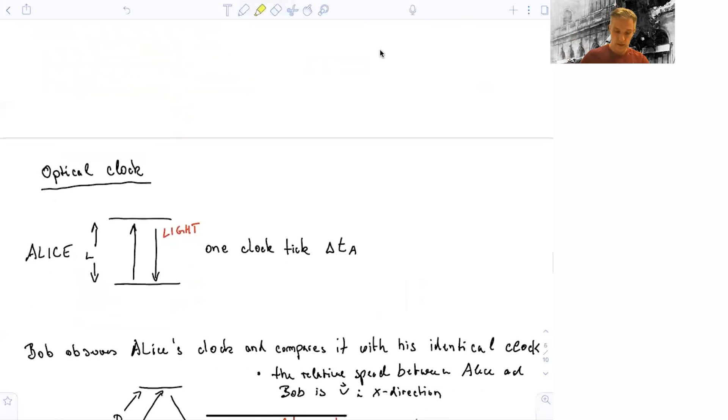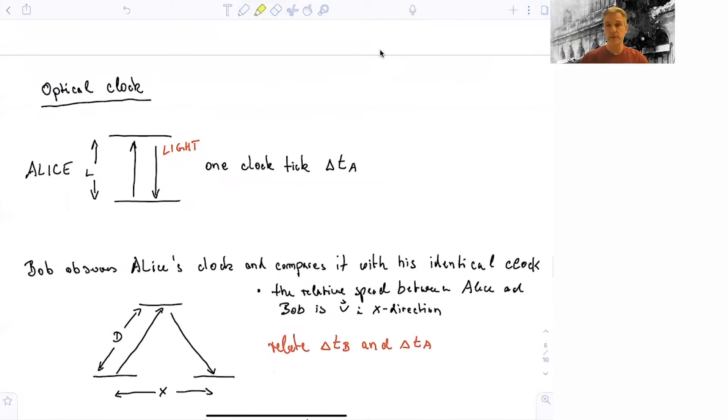Let's look at clocks a little bit more and design an optical clock. So here the situation is as follows. We have two mirrors in which we inject light. The light travels up and travels down, and that's what we call one clock tick of this optical clock. The length between the two mirrors is L. So for Alice, she has this clock in her hand, and she can happily observe the ticking of the clock. Bob observes Alice's clock and compares it with his own identical clock. There's a relative speed between Alice and Bob, and that's V in x direction. Now the task for you is to relate the clock ticks which are observed by Bob and the ones which are observed by Alice in Alice's clock. So again, stop the video and work out the algebra.